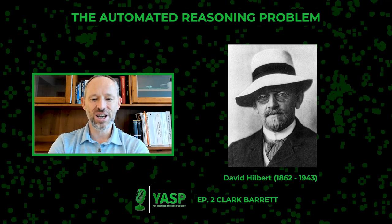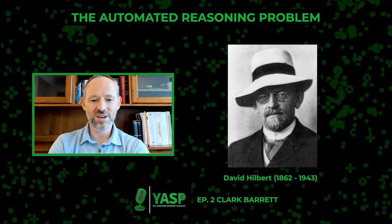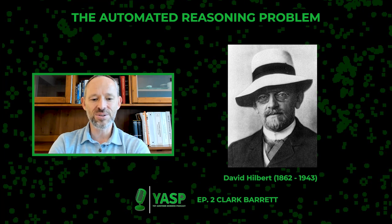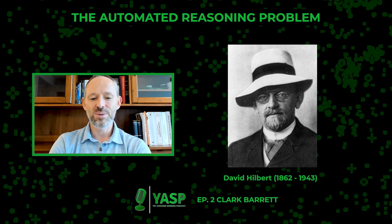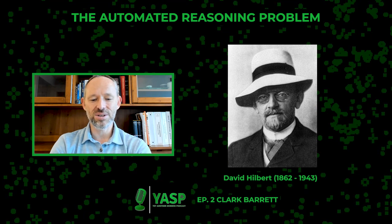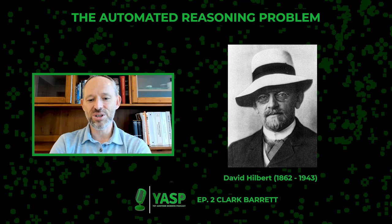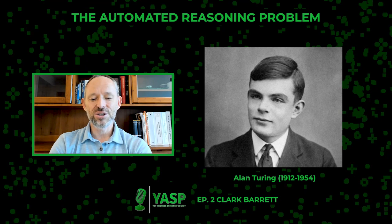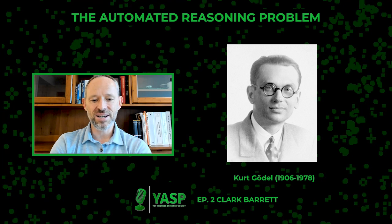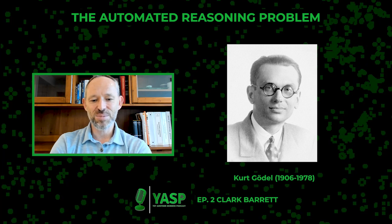Hilbert's Entscheidungsproblem was really at the heart of this as well — can we have one algorithm that will just answer any question in mathematics and tell us whether it's a theorem or not? And then Turing and Gödel crashed the party, saying no, you can't, because it's undecidable.